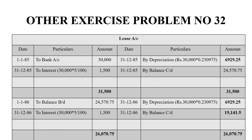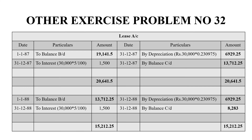In the next year, we get a credit balance of 19,141 rupees 50 paise, and the grand total on both sides is 26,070 rupees 75 paise. For the third year, that is 1987, the previous year balance of 19,141 rupees 50 paise is brought down. Interest is 1,500 and depreciation is 6,929 rupees 25 paise. The balancing figure on the credit side is 13,712 rupees 25 paise, and the grand total on both sides is 15,212 rupees 25 paise.